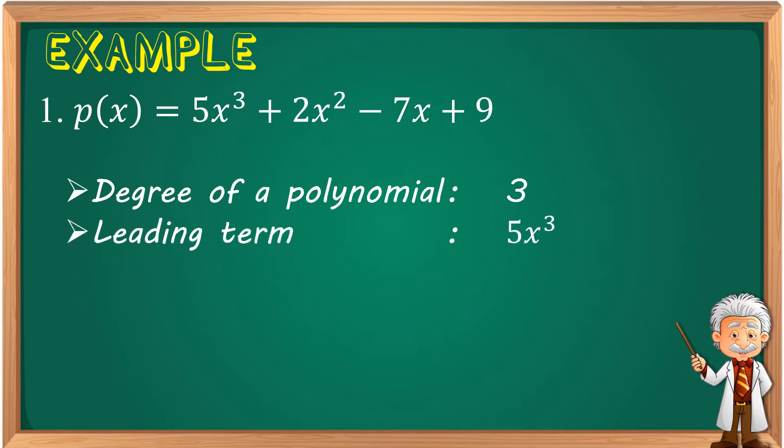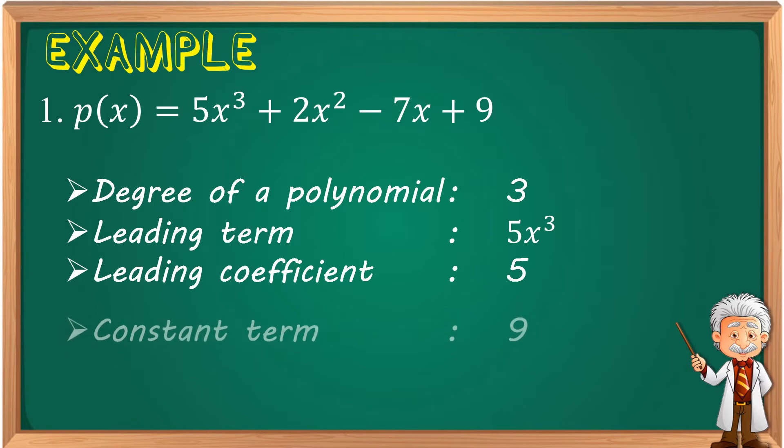Next, the leading coefficient or the leading term, I mean, is 5x³. And the leading coefficient is 5, which is in the first term. And lastly, our constant term, the one without a variable is 9.